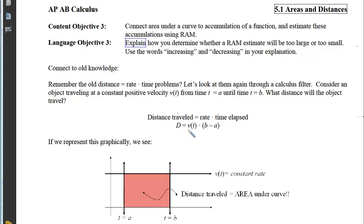Now, if I take that v(t), which is the y coordinate on this graph, and I multiply by the b minus a, which is the width, I end up getting the area of this rectangle. Therefore, the distance traveled will equal the area under the velocity curve.